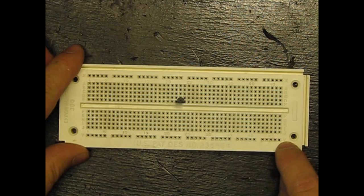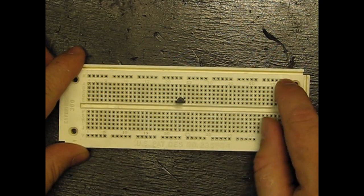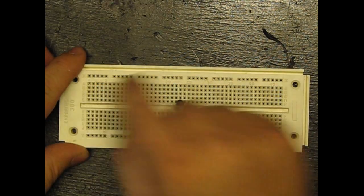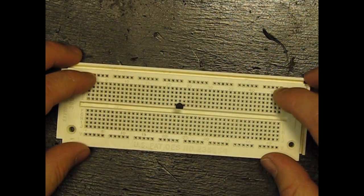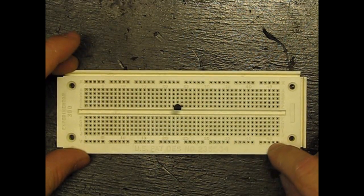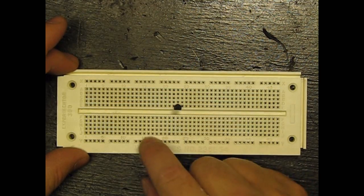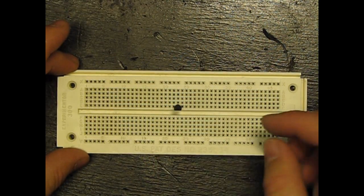Essentially how this works - on this one, all of these pins are connected and all of these pins are connected. A good use for these: you can put your positive voltage here and your ground or negative voltage here. So when you're building your circuit, you have power and negative within easy access.